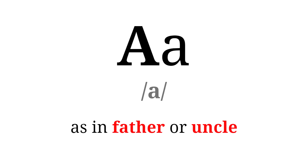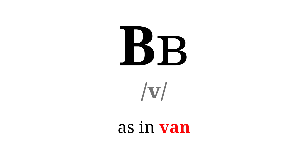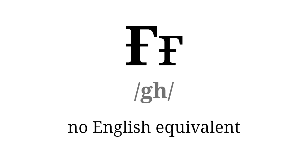The first letter: A as in 'father' or 'uncle.' B as in 'boy.' V as in 'van.' G like 'go' — there is no English equivalent, so it's more like French. Here are some Tajik names with this letter: Kholibjon, Ghaibologjon, etc.